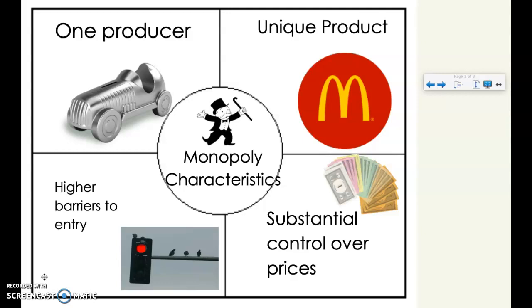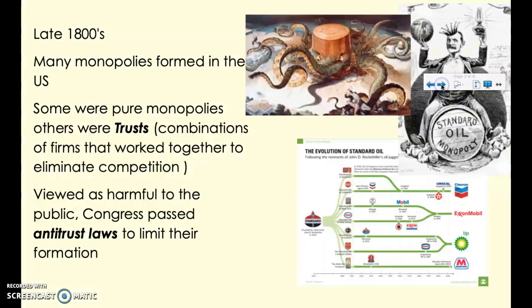Monopolies are price setters rather than price takers, which gives them a substantial amount of control. Monopolies really came to their height during the late 1800s, when quite a few monopolies started to arise in the United States. Some took the form of one firm or company that controlled the market for a unique product. Others formed what was called a trust — a combination of firms working together to get rid of competition and to set prices.